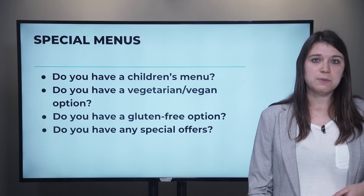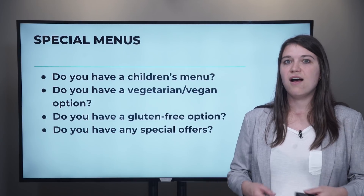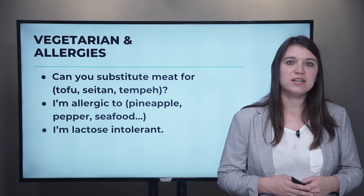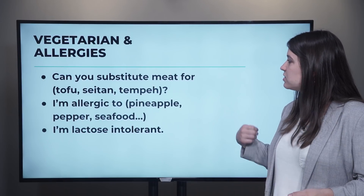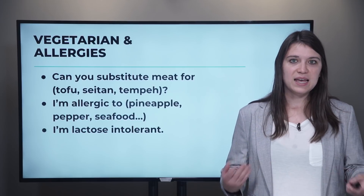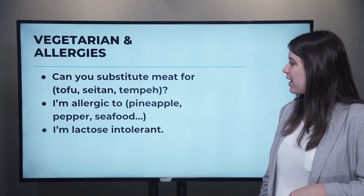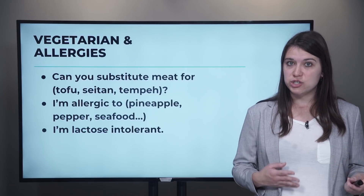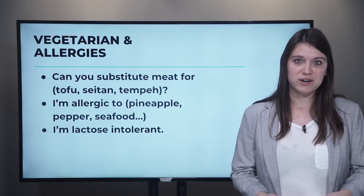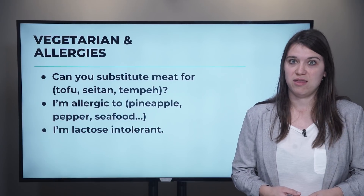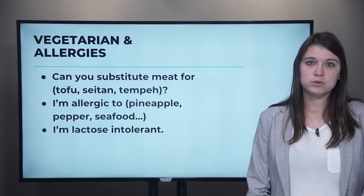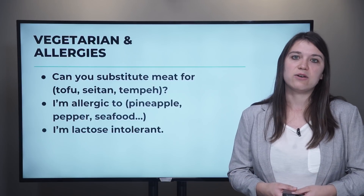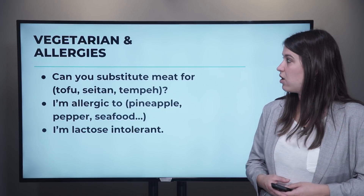You might also ask, 'Do you have any special offers?' They might say, 'Tonight we have a two-for-one on pizzas,' or 'We have a buy one, get one free.' Going back to vegetarian, maybe you can ask them to substitute the meat for something else — can you substitute for tofu, seitan, tempeh, etc.? It's also important to let the restaurant know about your food allergies if you have any: 'I'm allergic to pineapple, pepper, seafood,' whatever it is, so they make sure they don't put it in your food. If you're lactose intolerant — meaning you cannot eat or drink any dairy products like milk or cheese — it's important to let the restaurant know that as well.